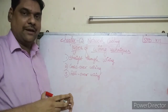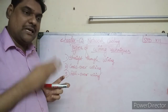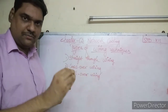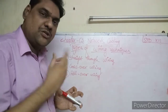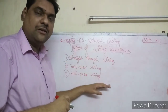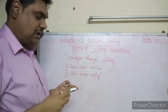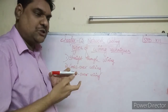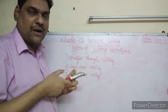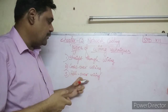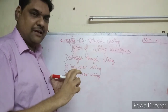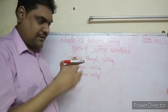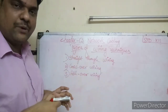The last type is rollover wiring. In rollover wiring, the wire is reversed — the first pin of one end becomes the last pin of the other end. Using the T568-A color code, the first wire is white-green and the last is brown on one end, and on the other end the first is brown and the last is white-green. This is called rollover wiring and is used for programming or configuration changes to a device.